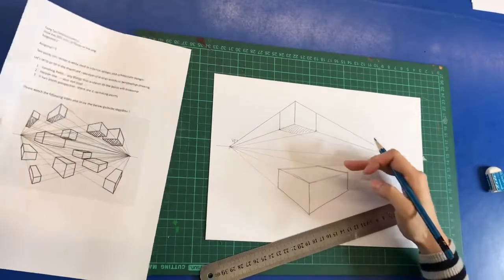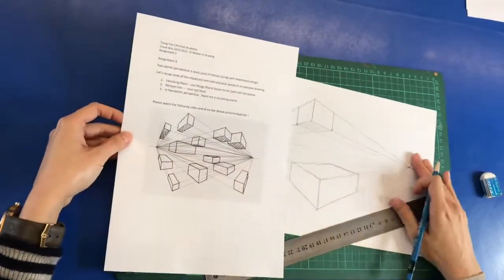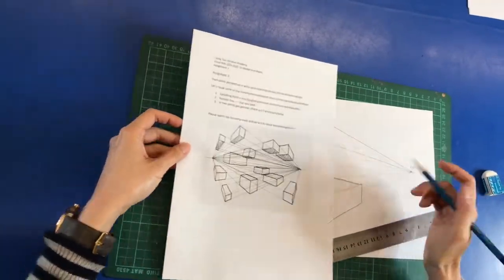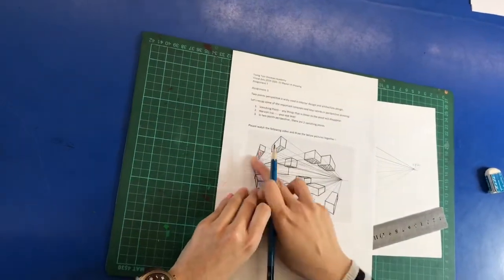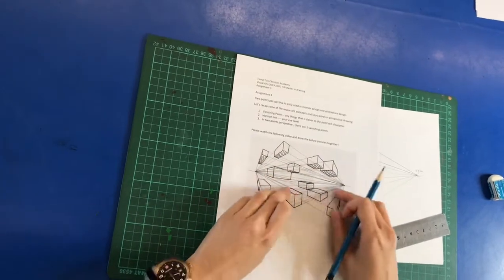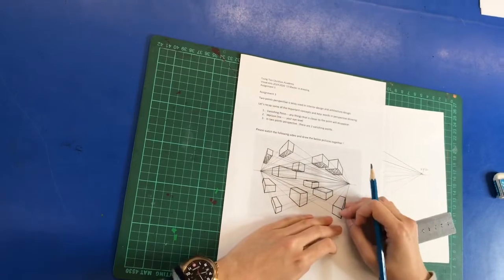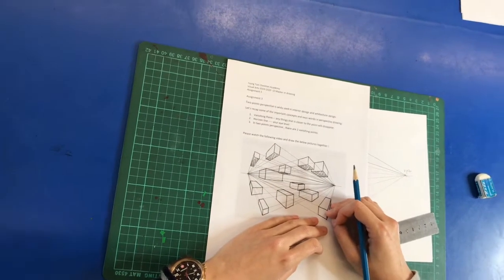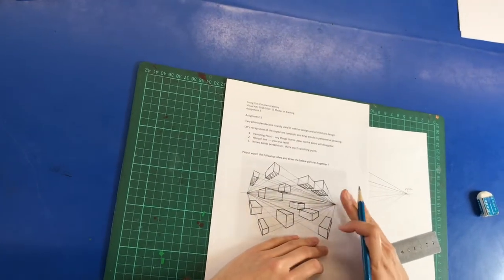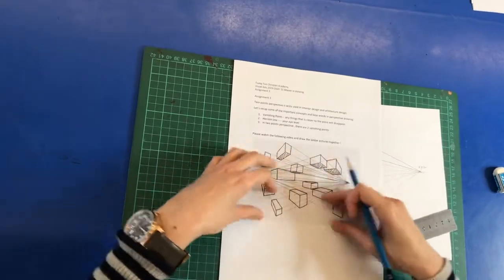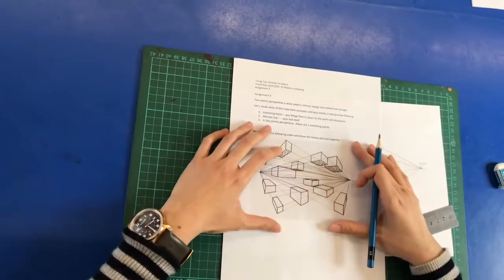So after you knowing this concept and follow the slogan, then you can draw different shapes of the rectangular box in different angles with a correct perspective. And then this lesson we will end to here. Next lesson, we are going to introduce you how you can extend the box into an imaginative city.